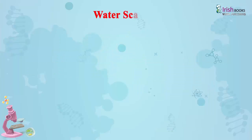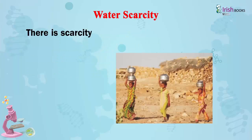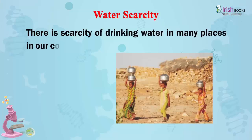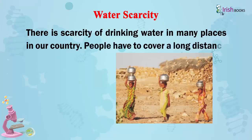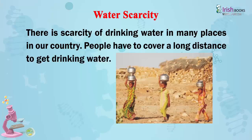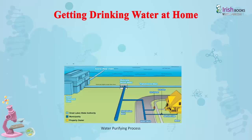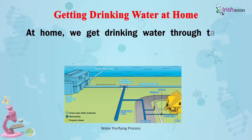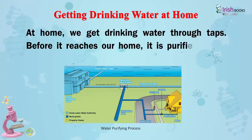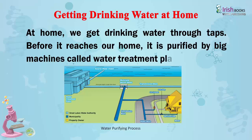Water Scarcity. There is scarcity of drinking water in many places in our country. People have to cover a long distance to get drinking water. At home, we get drinking water through taps. Before it reaches our home, it is purified by big machines called water treatment plants.